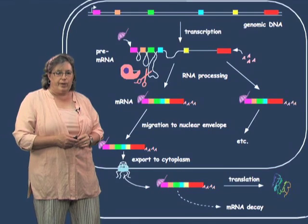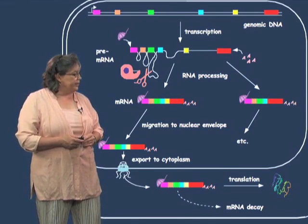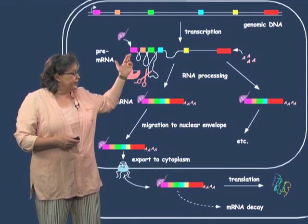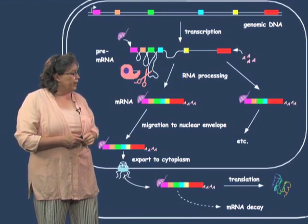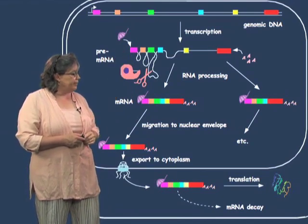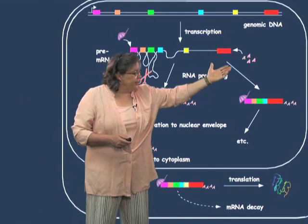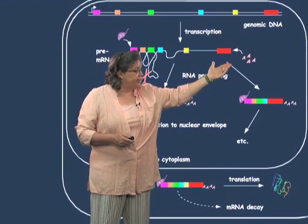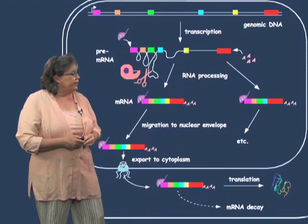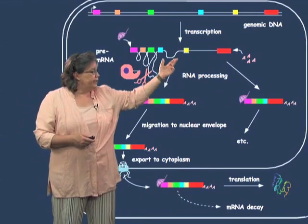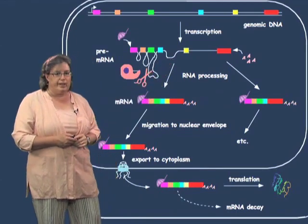That pre-mRNA undergoes several steps of processing. First, it is capped with a 7-methylguanosine cap. At the 3' end, it is cleaved and then a poly-A tail is added. And then in the middle, these intron sequences are literally spliced out.